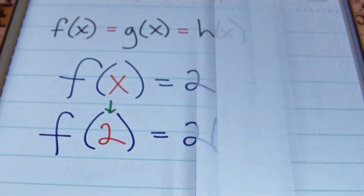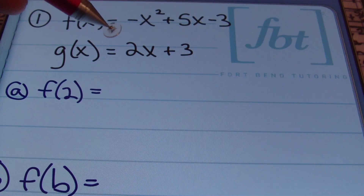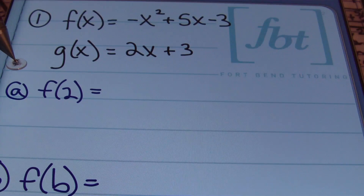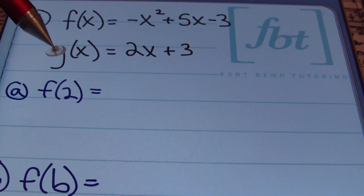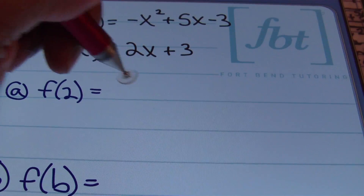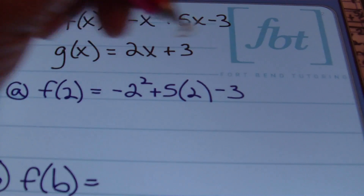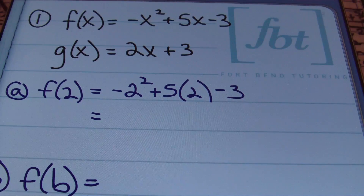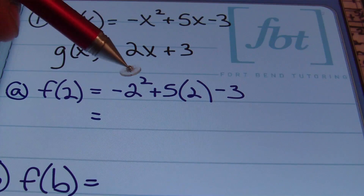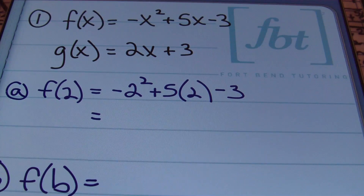All right, let's check out some problems. In problem number 1, we have f of x equals negative x squared plus 5x minus 3. We're also told that g of x is equivalent to 2x plus 3. In part A, they're asking us to find f of 2. I'm going to replace every x in the f function with the number 2 and then simplify. I'll have negative 2 squared plus 5 times 2 minus 3. I've replaced every x in my original f function with the number 2.